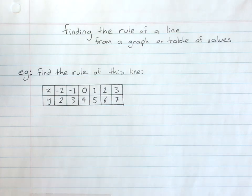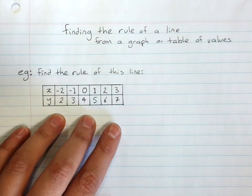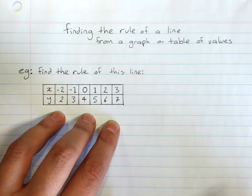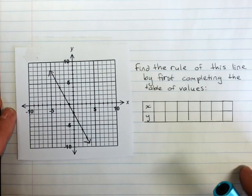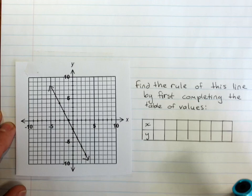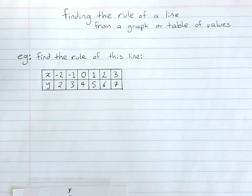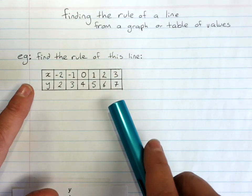Finding the rule of a line from a graph or from a table of values. Here's a table of values for a line and I'd like you to find the rule. And in the next question, here's a graph of a line and I want you to find the rule. These both use the same method.